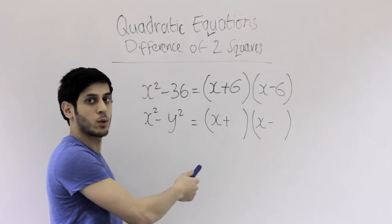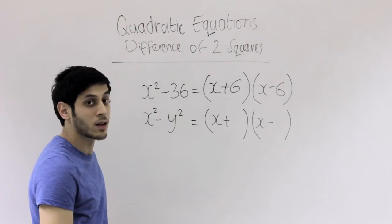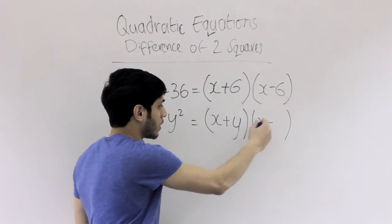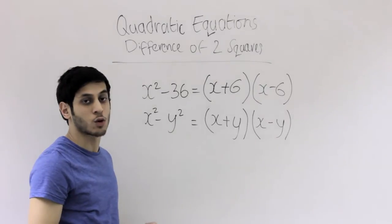And the square root of y squared is just y. So all we've got to do is just put y in there. And that's it. We've answered the question, and that's how you solve the difference of two squares.